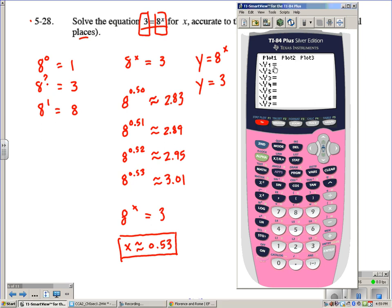So, let's go in here to our y equals menu. The first one here is y equals 8 to the power of x. The second one, y equals 3. Remember, this one is going to be an exponential curve. This one is just going to be a horizontal line, because we don't have any x value there, so its slope is 0.